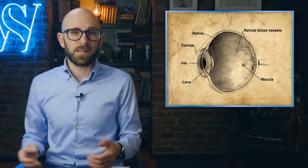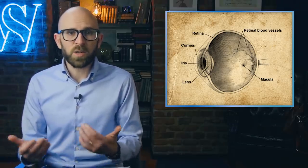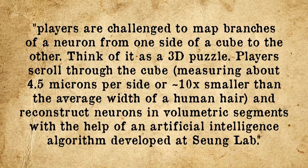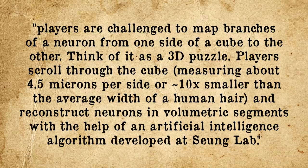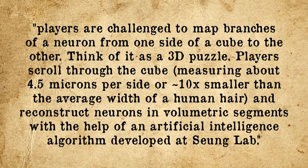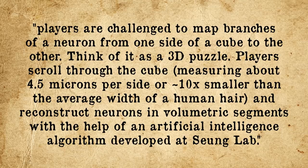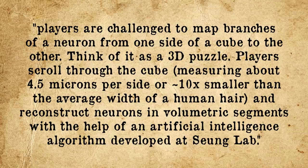After they were put together, a 3D image was created, and this was then turned into an eyewire game where players are challenged to map branches of a neuron from one side of a cube to the other. Think of it as a 3D puzzle. Players scroll through the cube, measuring about 4.5 microns per side, or ten times smaller than the average width of a human hair, and reconstruct neurons in volumetric segments with the help of an artificial intelligence algorithm.